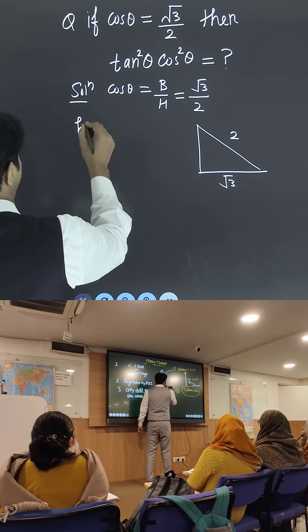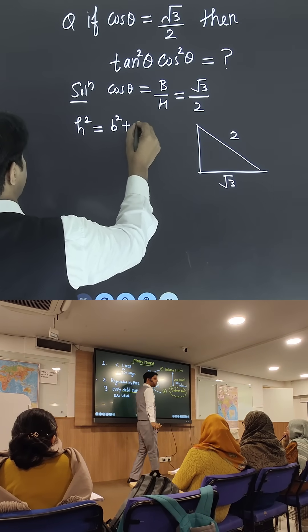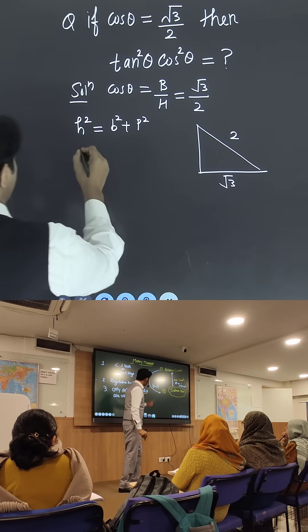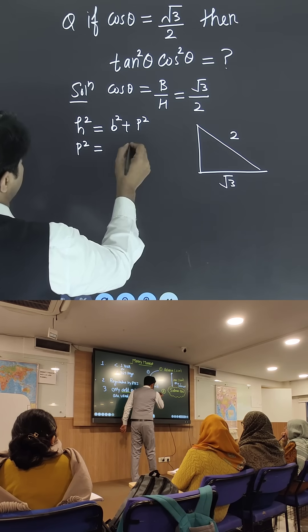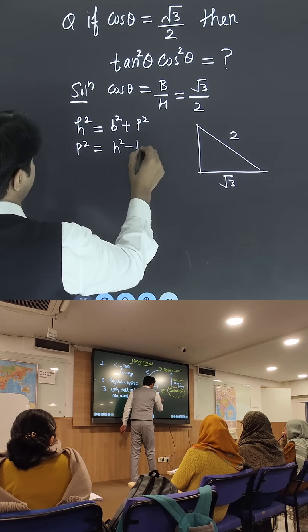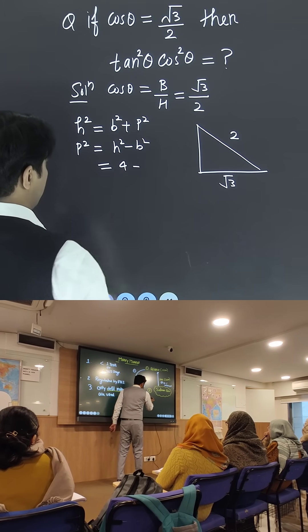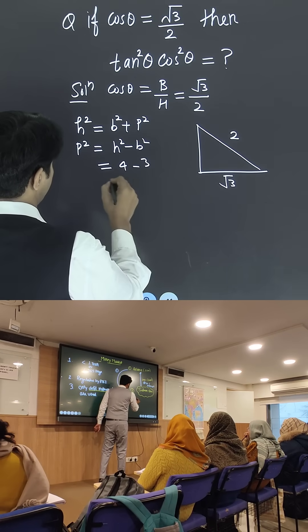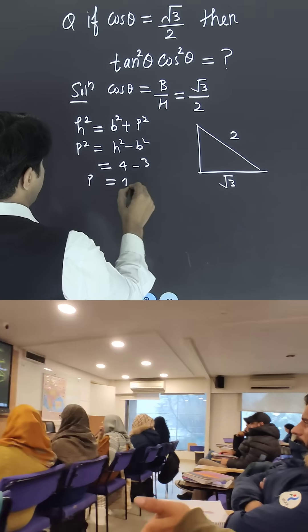So, how can you find out? You know, H² is equal to base² plus perpendicular². So, can I say perpendicular² is nothing but hypotenuse² minus base²? What is hypotenuse²? It will become 4. Base² will become 3. So, what is the value of perpendicular? It is 1.